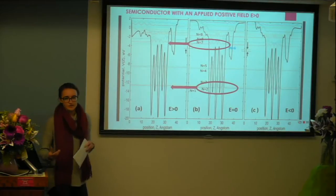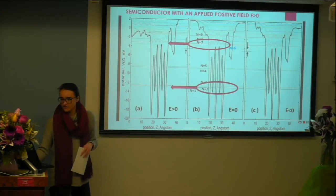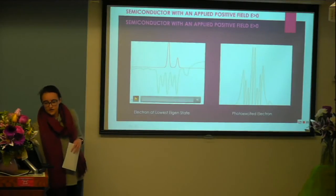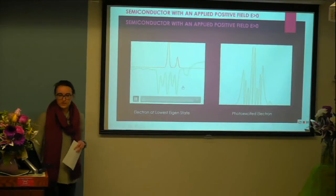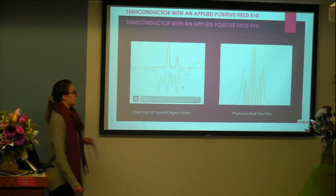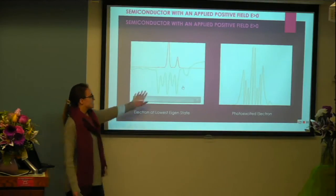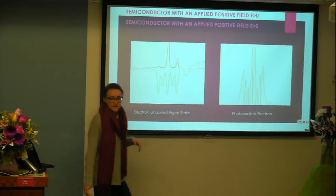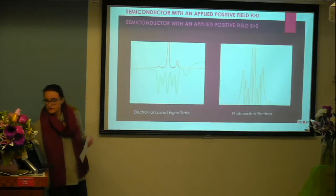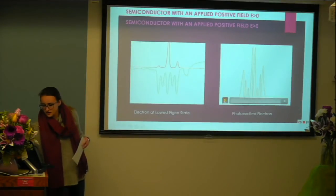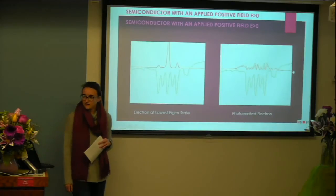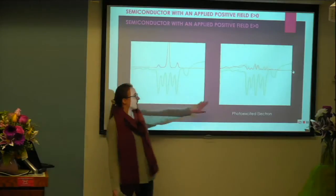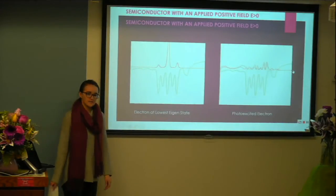If you apply a positive field with no excitation of the electron, the electron has a hard time moving outside of the semiconductor. The middle section is our semiconductor, and as we move this way we get to our titanium dioxide accepting agent. Once we excite the electrons to a state of nine, we see a lot more motion of the electron, and it actually makes its way outside of the semiconductor and starts to populate that accepting agent.